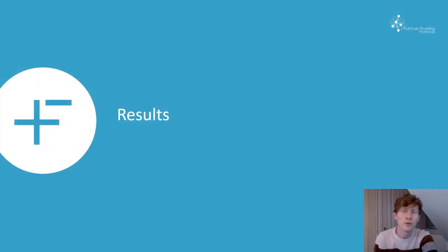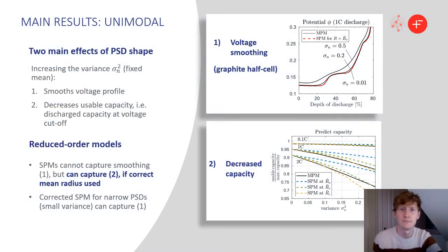For the results, we focused on constant current discharges of half cells. For unimodal PSDs, those with a single peak, we found two main effects of the PSD shape. Increasing the variance but fixing its mean, therefore only changing its shape or its spread, smooths the voltage, shown here on the top right.